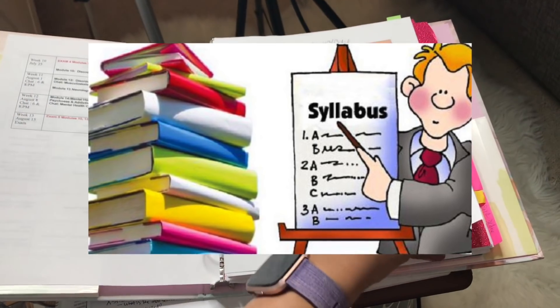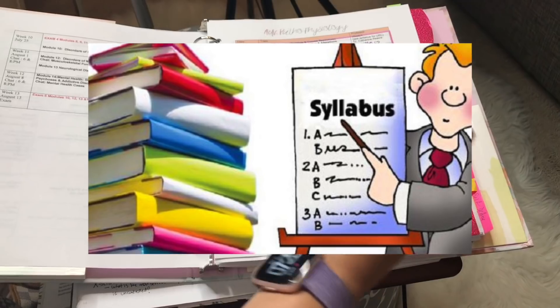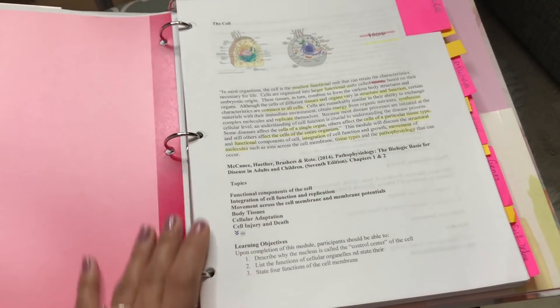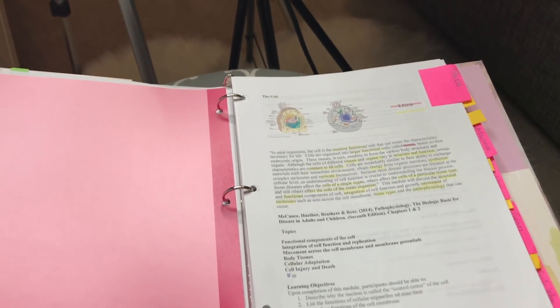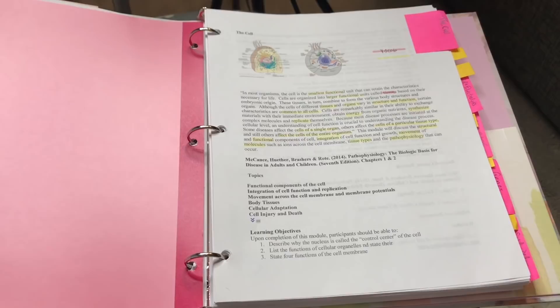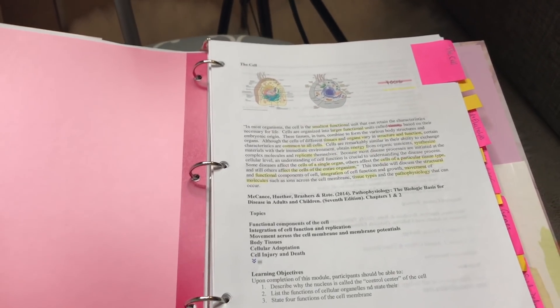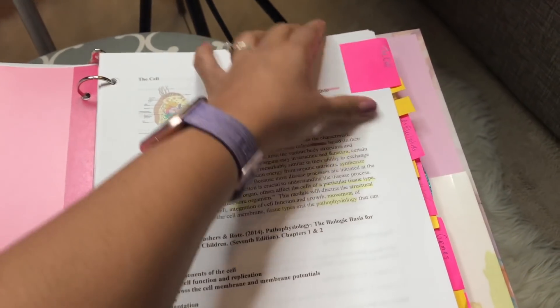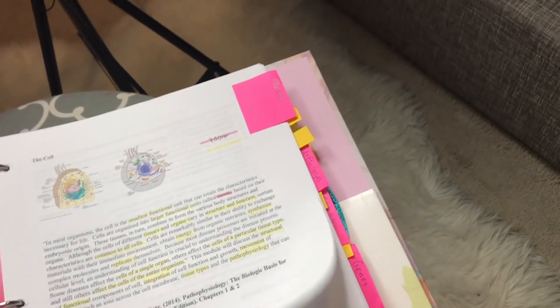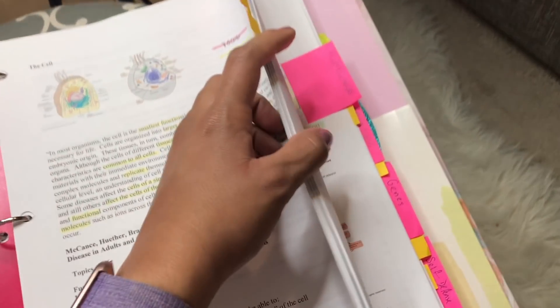My binder has sticky notes for all the modules, my course schedule in the front, and highlights broken down by exam — each color refers to a different exam. I used glittery dividers. All the slideshows, PowerPoints, and extra notes from videos are printed out and put in here. I use sticky note tabs for each section of the module: the cell, acid base, fluids and electrolytes, genes, and self-defense mechanisms. Everything is printed double-sided to save space.